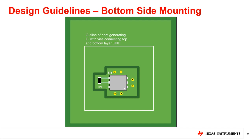If possible, mount the temperature monitor on the bottom side of the PCB directly below the heat source as shown in the figure. Vias are a highly effective method for transferring heat quickly from one side of the PCB to the other because of the superior thermal conductivity of copper compared to FR4 PCB material. Therefore, using as many parallel vias as feasible, or using filled conductive vias to transfer heat from the heat source to the temperature monitor, creates a fast thermal equilibrium between the two ICs. A QFN or DFN package with a DAP further helps to decrease the thermal resistance path between the vias and the sensor die.